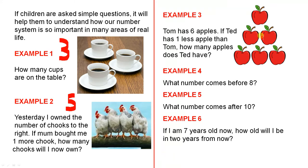Example 3: Tom has 6 apples. If Ted has 1 less apple than Tom, how many apples does Ted have? Well, you can just look at the picture and if you just cross off one of them and then you say well how many are left? And that's how many Ted has. So we've crossed one off so we can see straight away that Ted has 5 apples.